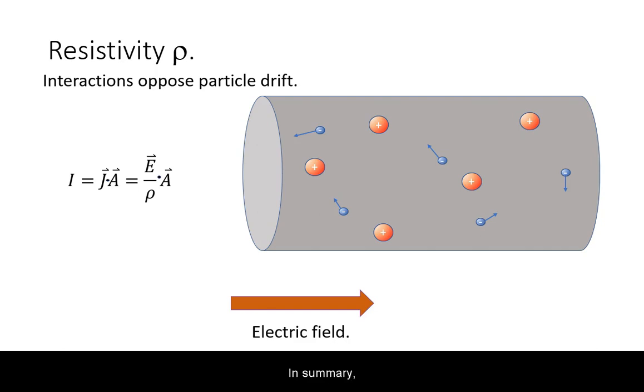In summary, the current is greater for higher magnitudes of the electric field and larger cross-sectional area, but is lowered by resistivity.